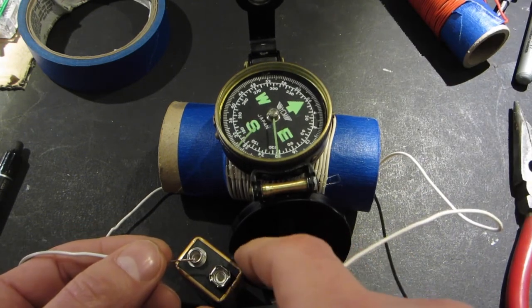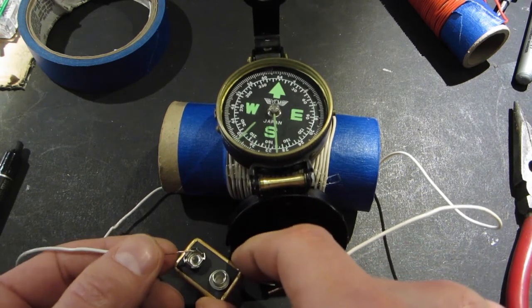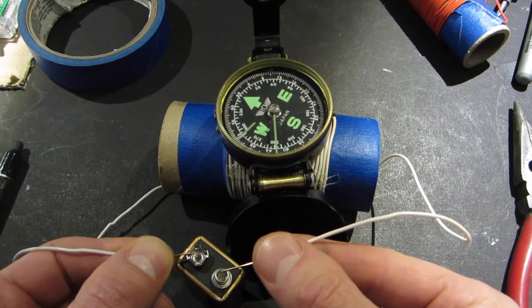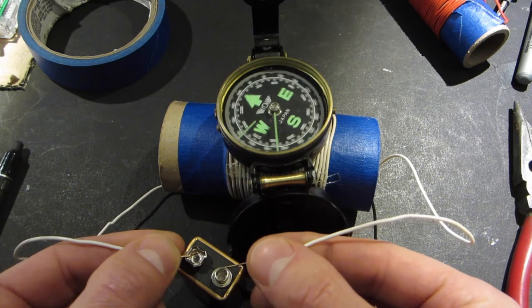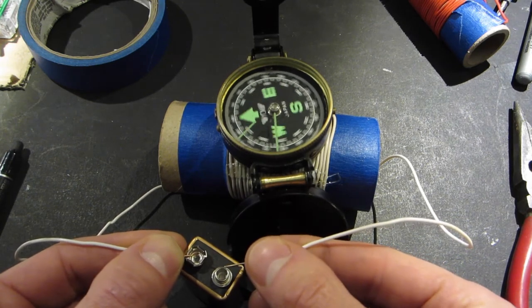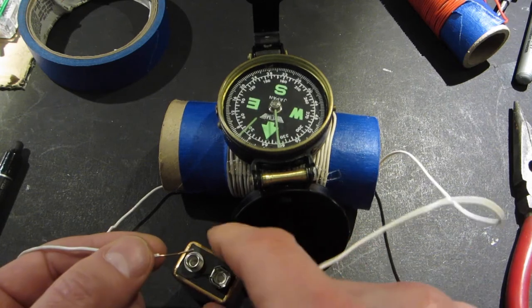Now Hans Christian Ørsted said that if you reverse the current, then you reverse the magnetic field. What happens when we do that? So by reversing the current, you reverse the magnetic field.